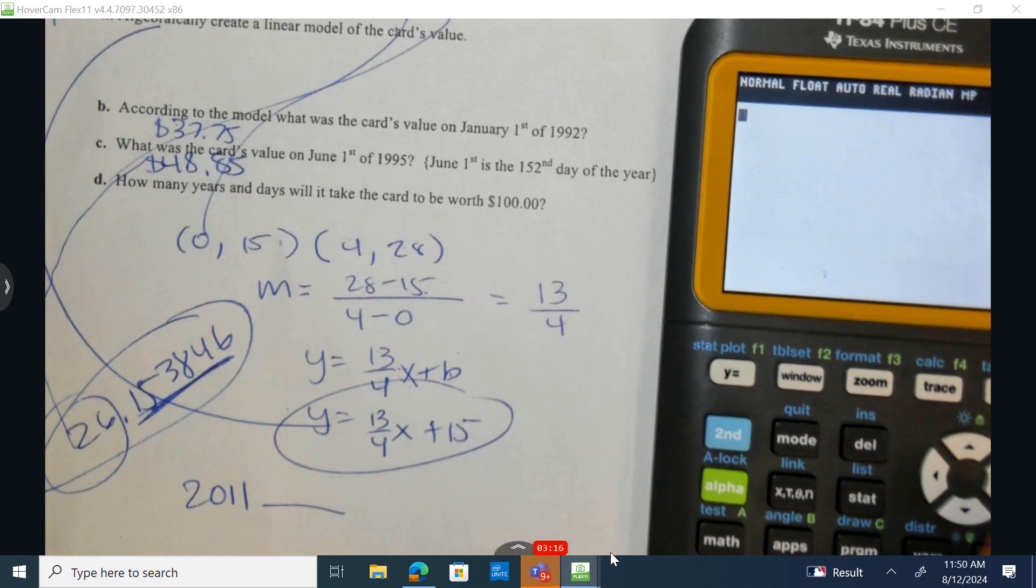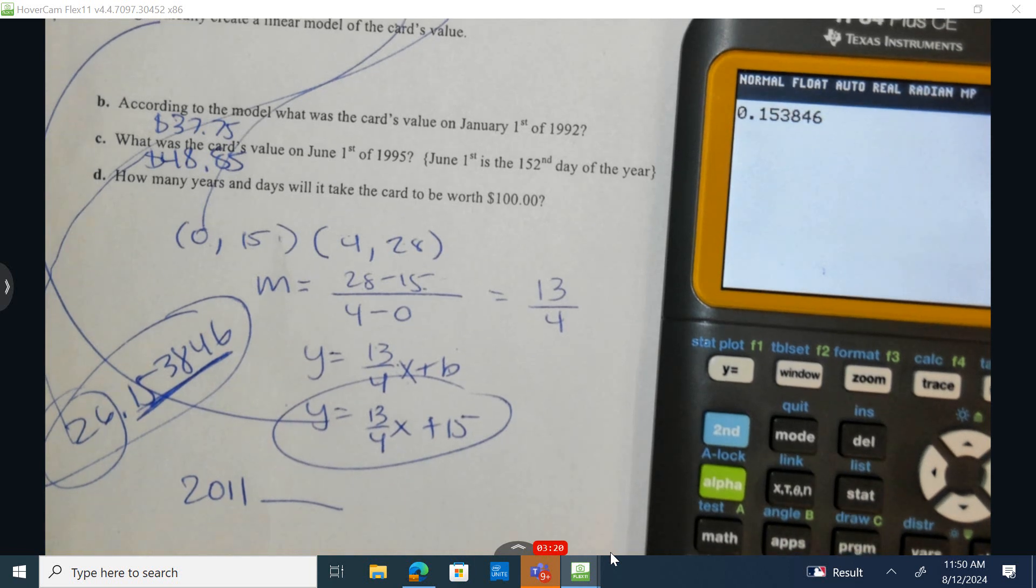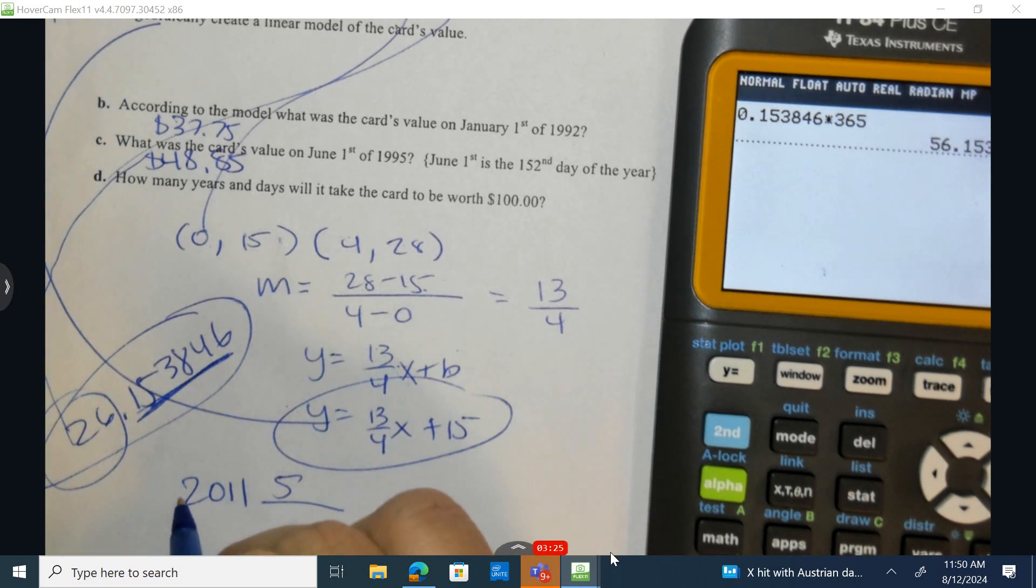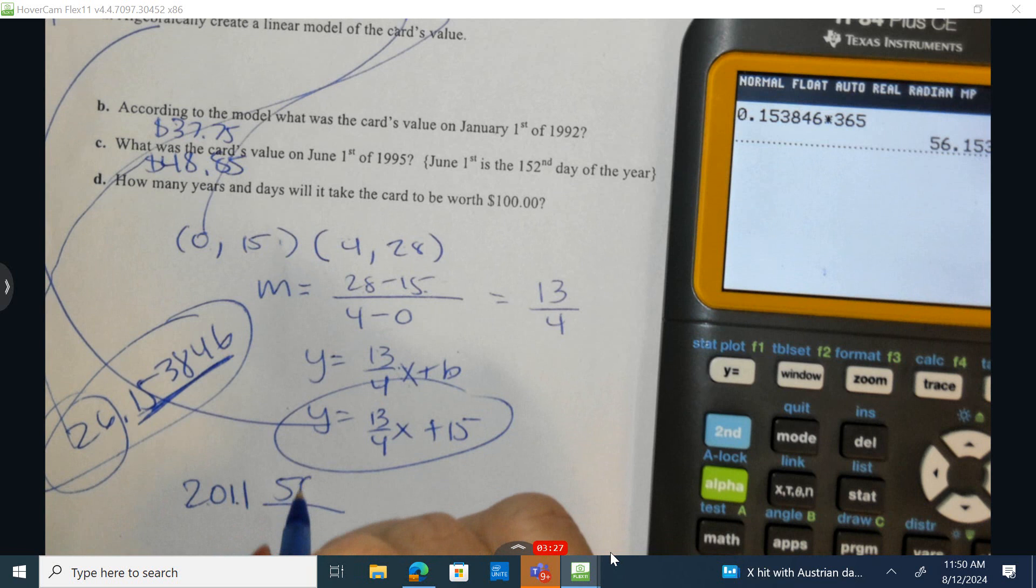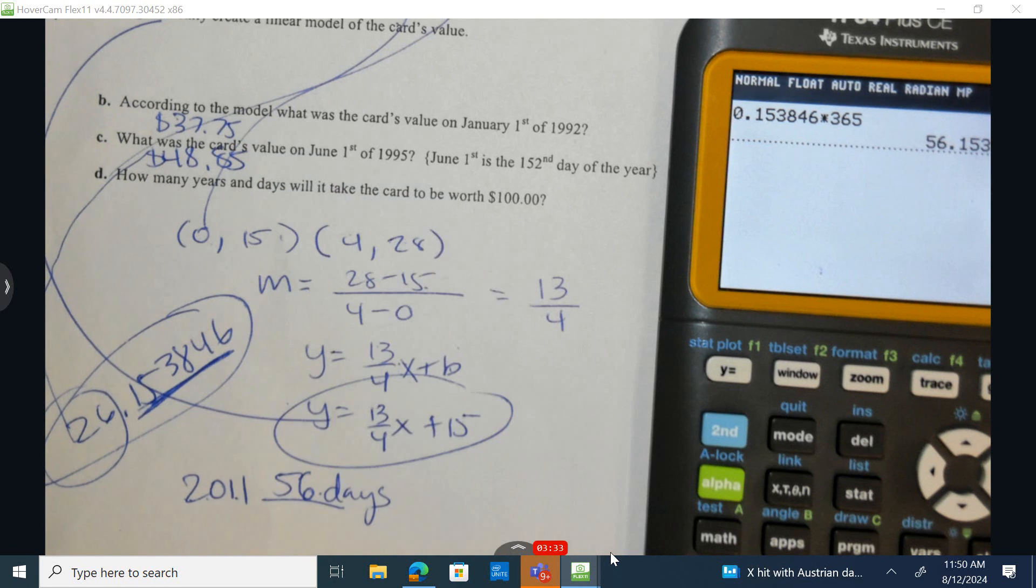This is a partial year. So 0.153846 times how many days are there in a year? 365. So in the year 2011 and 56 days, we can assume the value of this card would be approximately $100.